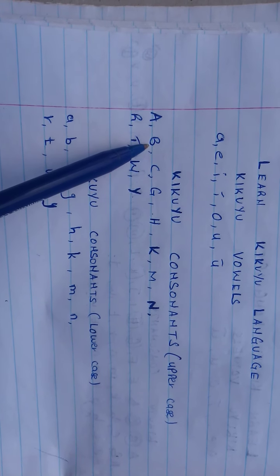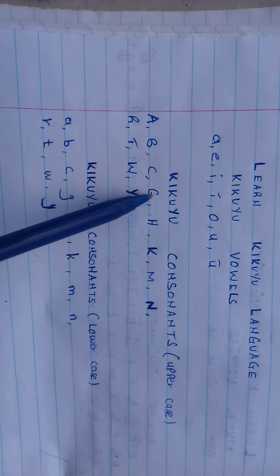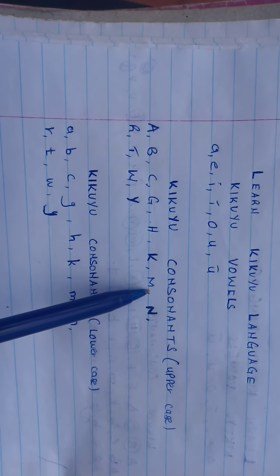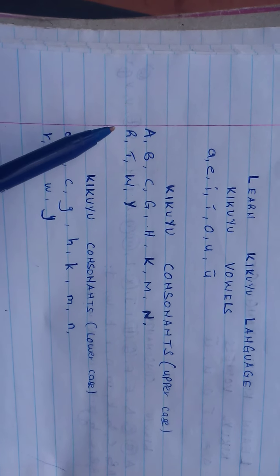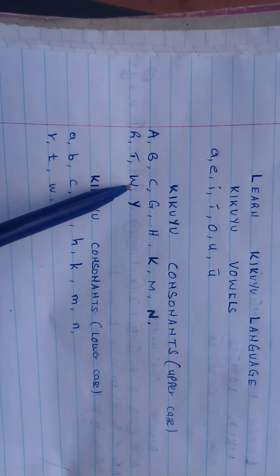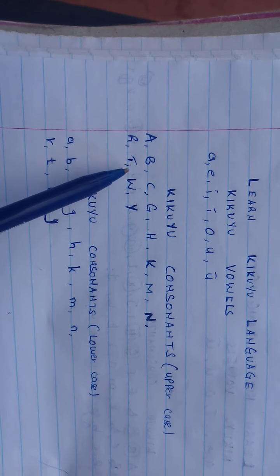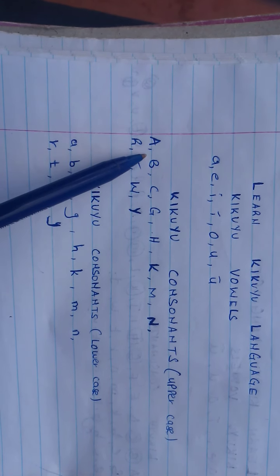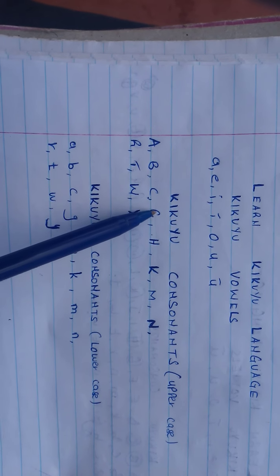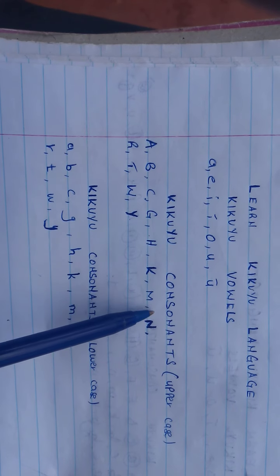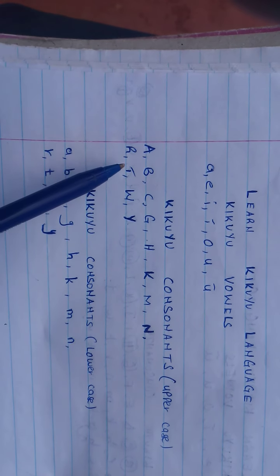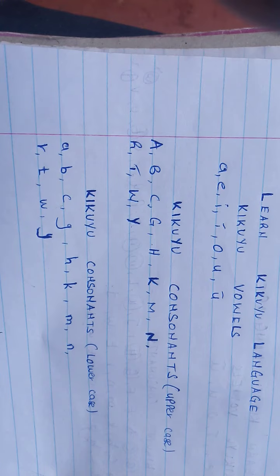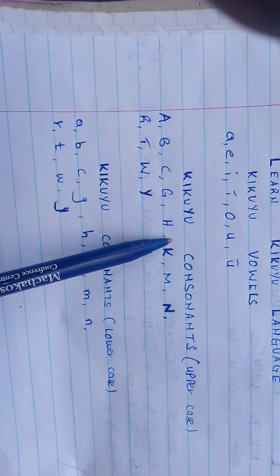How do we pronounce them? A, B, C, G, H, M, N, R, T, Y. Again, A, B, C, G, H, K, M, N, R, T, W. And this is how they are written in upper cases.